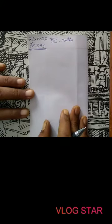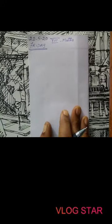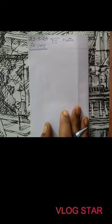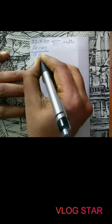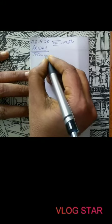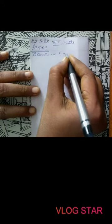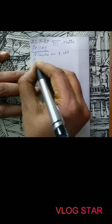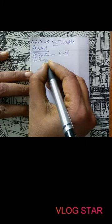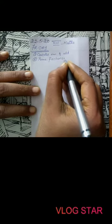Good evening students. Today we will be finding the square root using another method. In all these classes we have done the first method, which is continuous addition of odd numbers, and then prime factorization method.